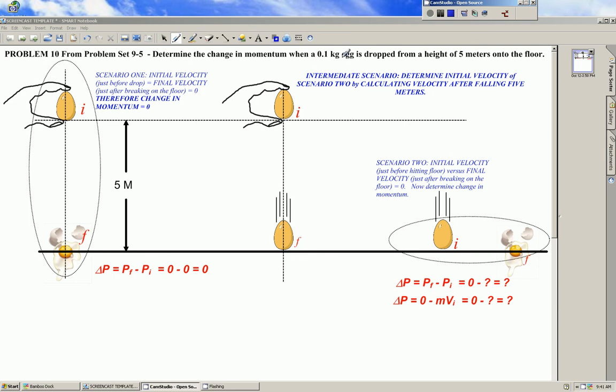Good morning. A number of you have asked about problem 10 from problem set 9-5 to determine the change of momentum when a 0.1 kg egg is dropped from a height of 5 meters onto the floor.